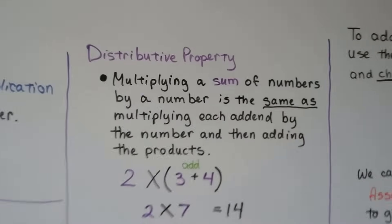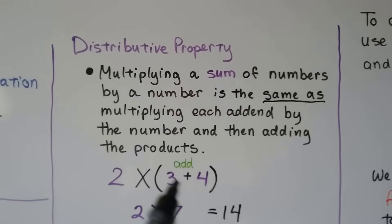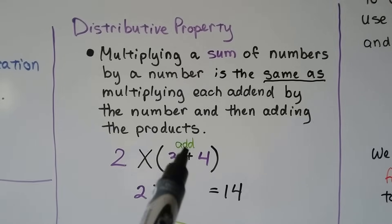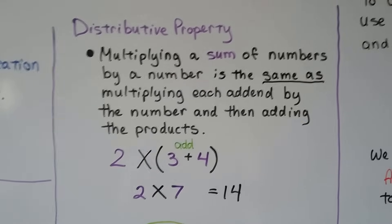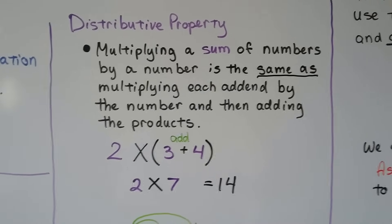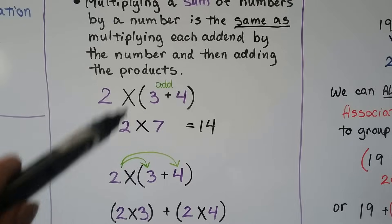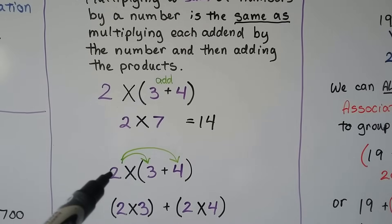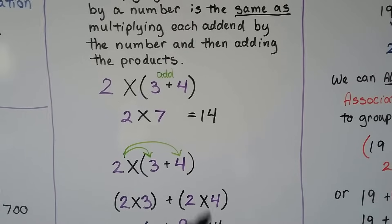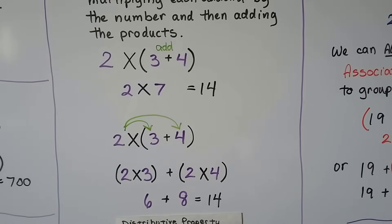For the distributive property, we're multiplying a sum of numbers. So 3 plus 4 is 7, and 2 times 7 is 14. Multiplying a sum of numbers by a number is the same as multiplying each add-in. So this is the same as 2 times 3, which is 6, plus 2 times 4, which is 8. And 6 plus 8 is equal to 14.